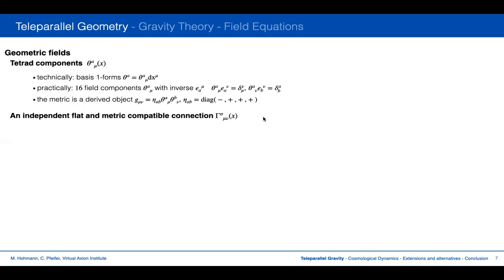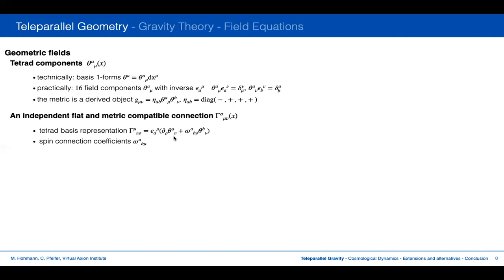As an additional ingredient we need a connection. Connections are usually characterized by their connection coefficients, here represented in a coordinate basis. This coordinate basis representation is related to the tetrad basis representation of the connection via a transformation equation, where the inhomogeneous transformation behavior of connection coefficients appears. These connection coefficients in the tetrad basis are usually called spin connection coefficients.